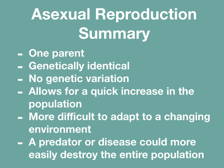So in summary, asexual reproduction has one parent, the offspring are genetically identical to it, there is no genetic variation, it allows for a quick increase in the population, but it's more difficult to adapt to a change in environment, and a predator or disease could more easily destroy the entire population.